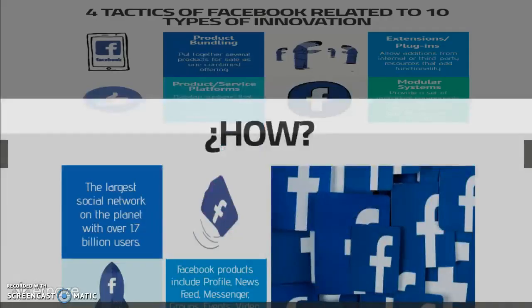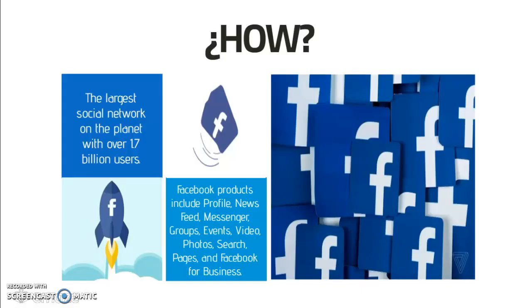So, how does Facebook do this? First, it's important to take into account that it is the largest social network on the planet with over 7 billion users. Facebook products include profile, news feed, Messenger, groups, events, video, photos, search, pages, and one that is very important: Facebook for Business.